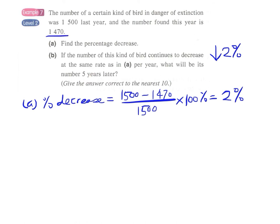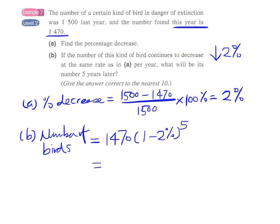Since this year we have 1470, the number of birds five years later will be 1470 times (1 minus 2%) to the power 5. The answer is 1330, correct to the nearest 10.